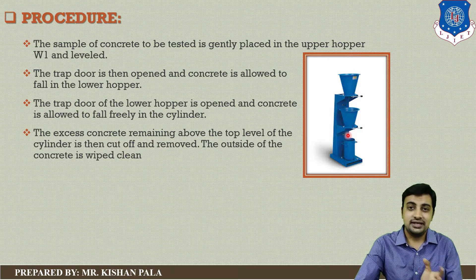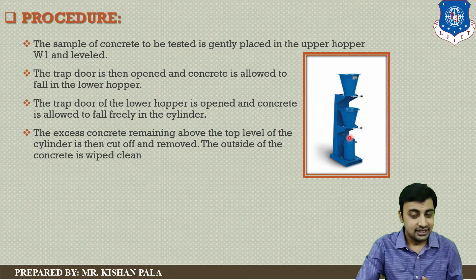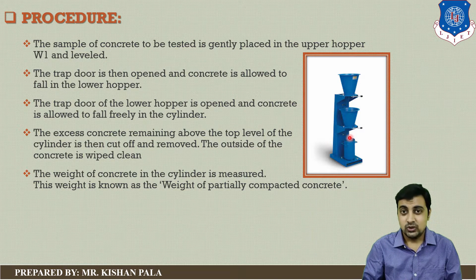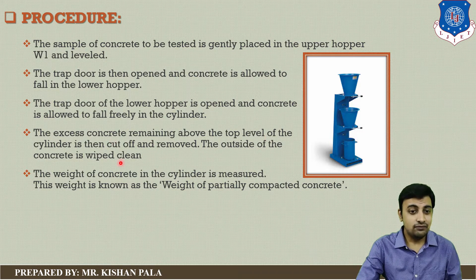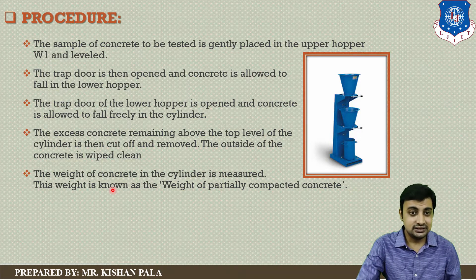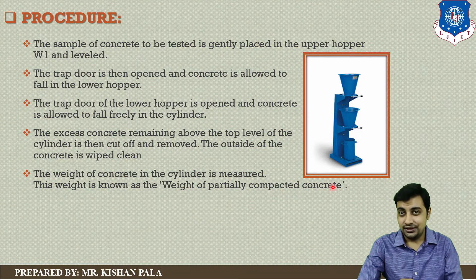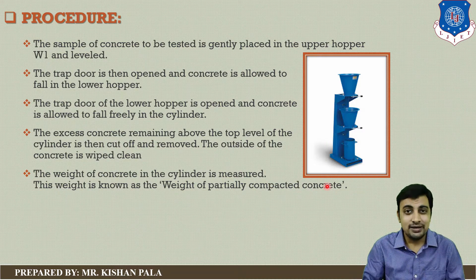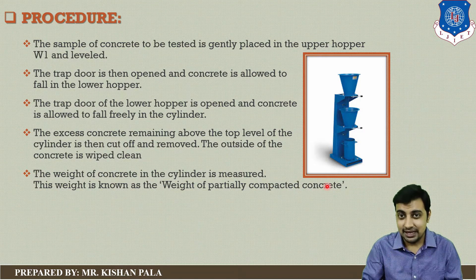The outside of the cylinder is wiped clean. We now have a concrete mass in the cylindrical mould. We have to weigh this sample — the weight of concrete in the cylindrical measure at this stage is known as the weight of partially compacted concrete, because we have not done full compaction on this sample.